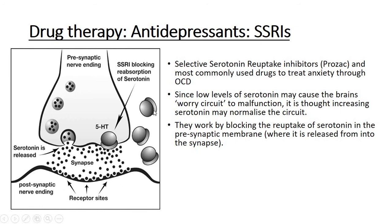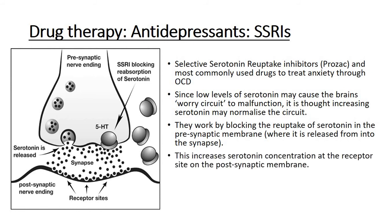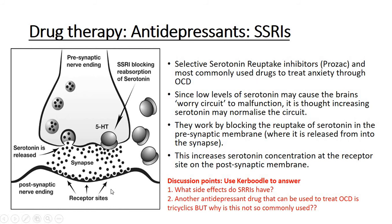By using SSRIs, represented with these shapes here, they block the reuptake process. In doing that, we have more serotonin staying in the synapse and having its effect — increasing its concentration, blocking that reuptake to increase the concentration in the synapse and to have a longer-lasting or increased effect. This increases the serotonin concentration at the receptor site on the post-synaptic membrane. By blocking the serotonin reuptake, we can artificially increase the levels of serotonin by keeping it in the synapse, therefore increasing its calming effect.